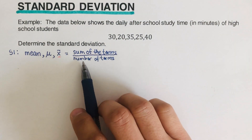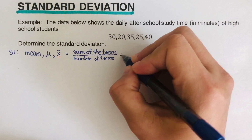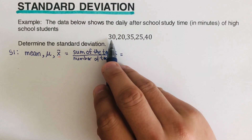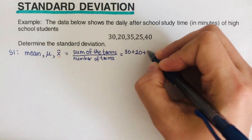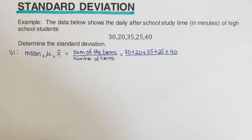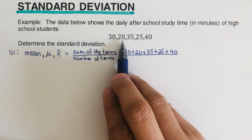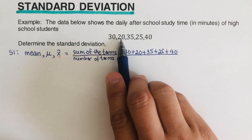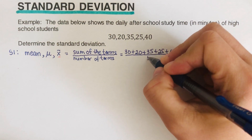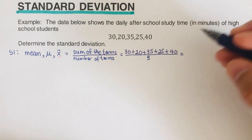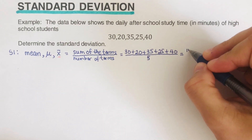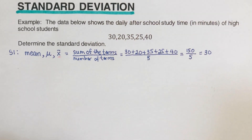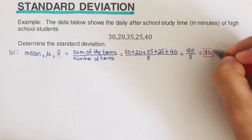the sum of the terms over the number of terms. We add all the terms and divide by the number of terms. I'll add all of these numbers, and then divide by the number of terms — there are five of them. Adding everything on top gives 150, divided by 5, which equals 30. So our mean is 30.